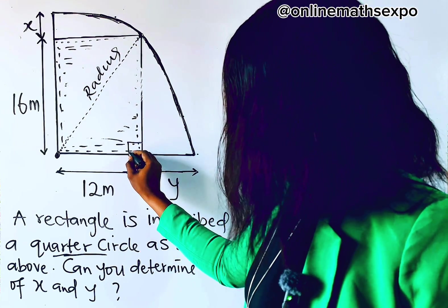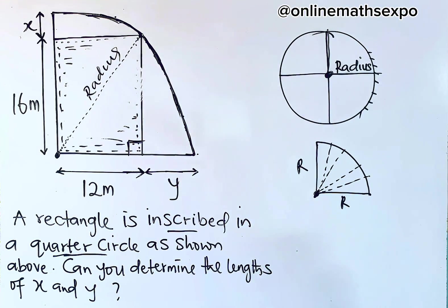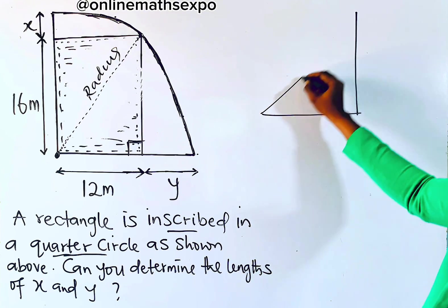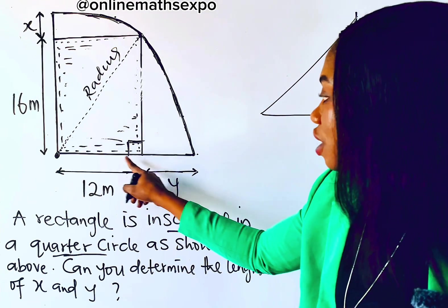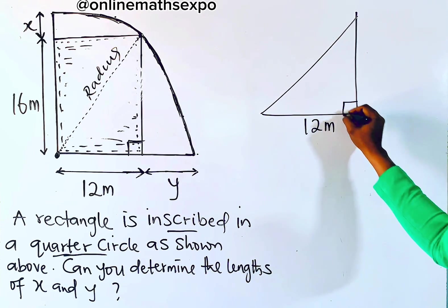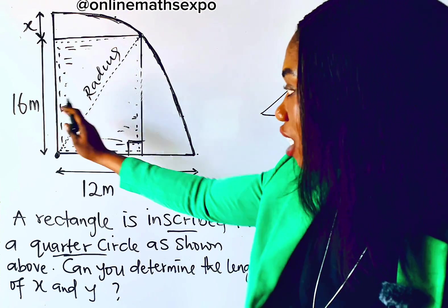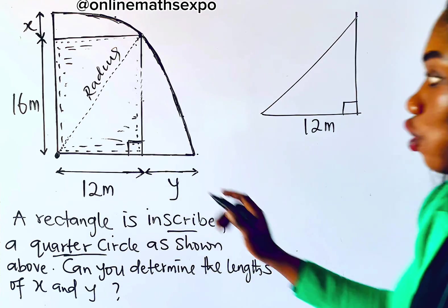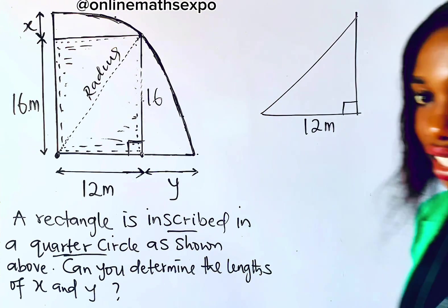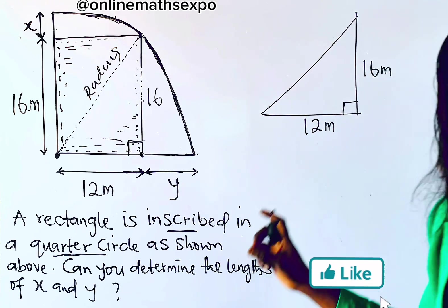Because this is a rectangle, it forms a 90° angle here. So bringing out this part of the shape, you can see we have a right triangle. From this end to this end is 12 meters, and from here to here is 16 meters — so automatically the other leg is also 16 meters. This has led us to a right triangle.